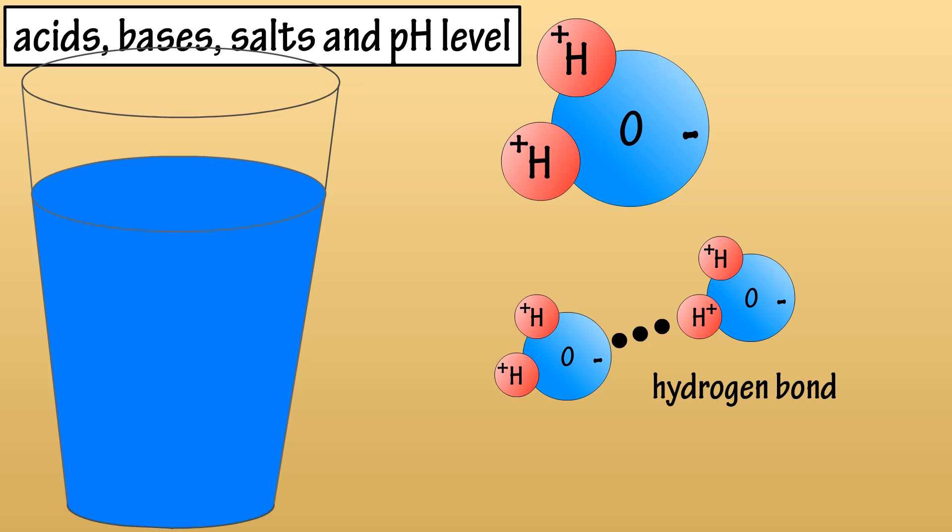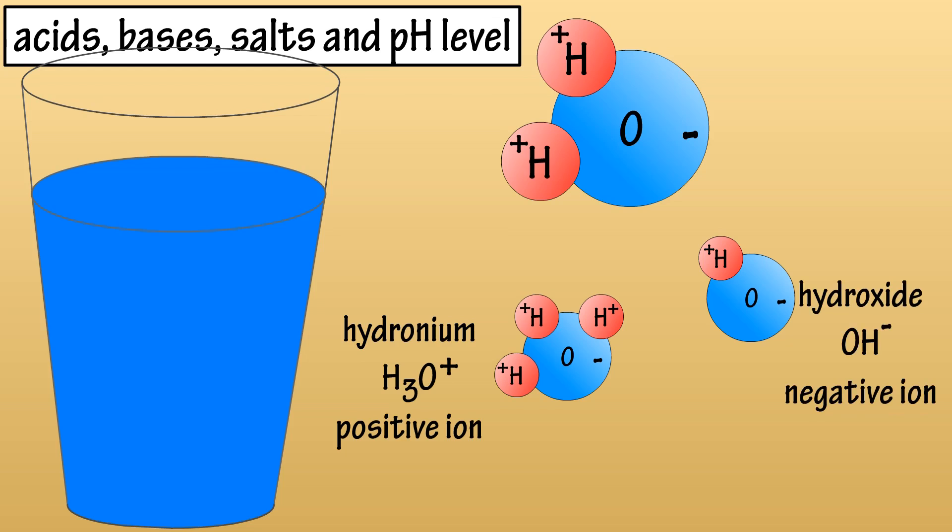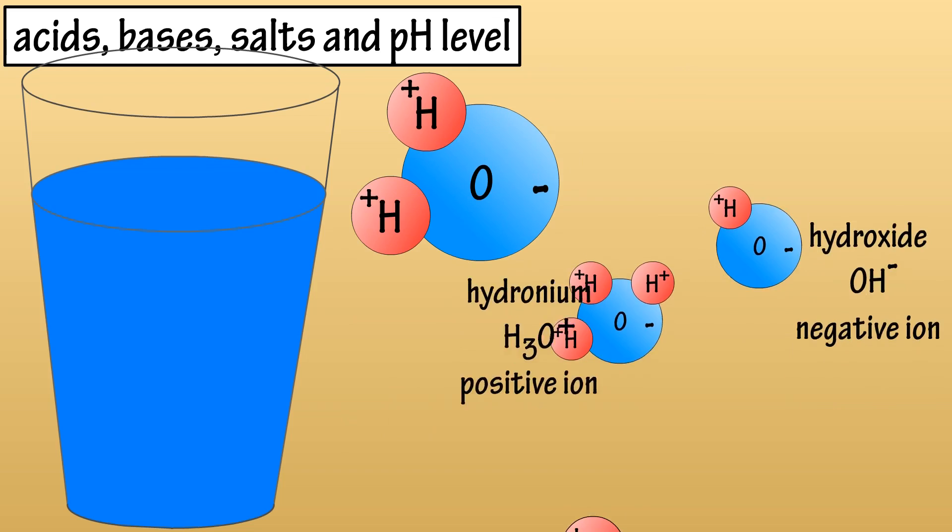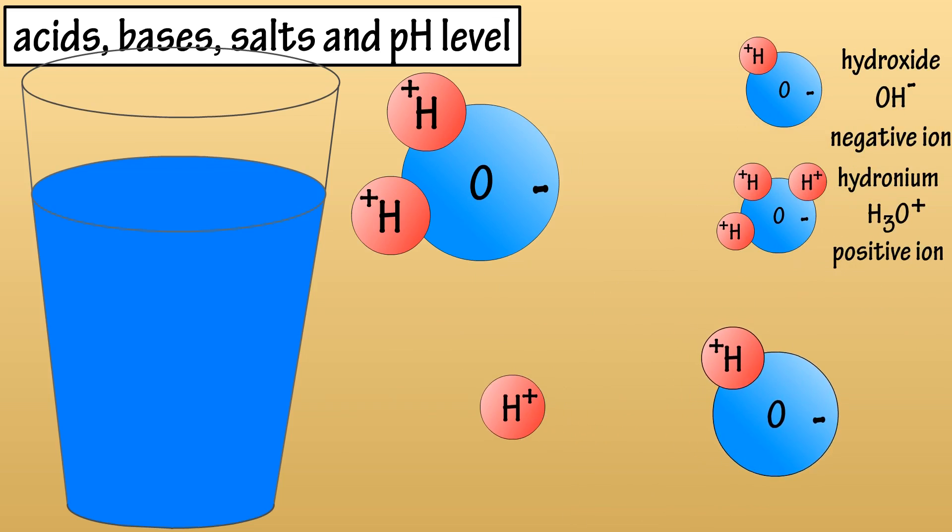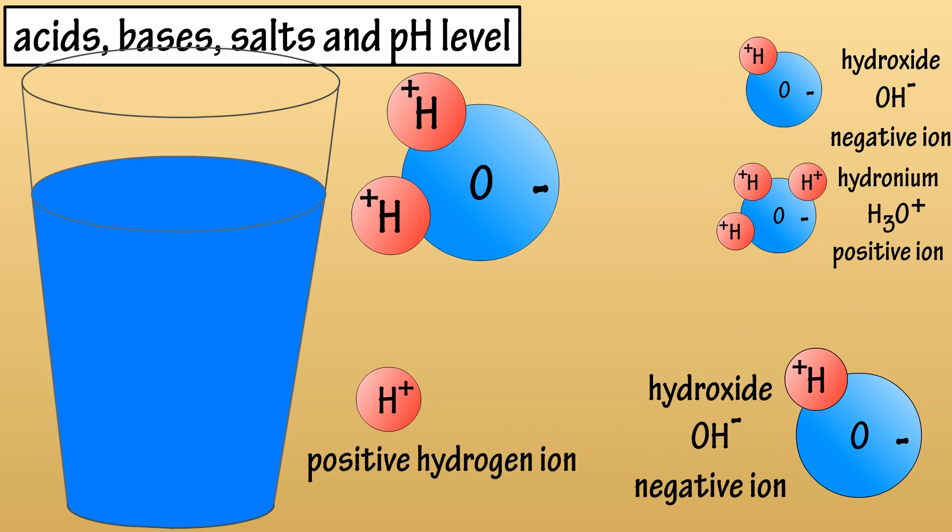Sometimes this attraction of a hydrogen atom of one water molecule to another molecule becomes so strong that it actually detaches from its original molecule and attaches to the other water molecule. So this yields a hydronium or H3O positive ion and a hydroxide or OH negative ion. Also, water molecules continually disassociate to form positive hydrogen ions and negative hydroxide ions.